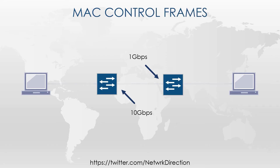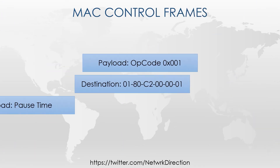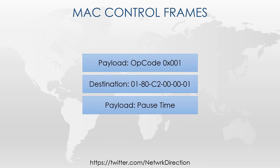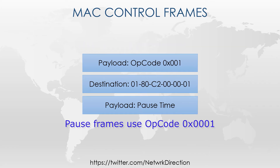Pause frames use a special type of Ethernet frame called the MAC control frame. In this case, MAC means media access control — it's not the same thing as a MAC address. This frame is used to send network information rather than regular data. In this case, an opcode of 1 means it's a pause frame.